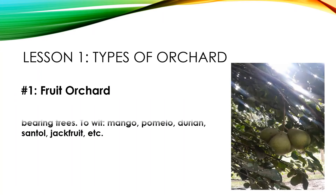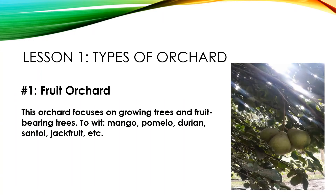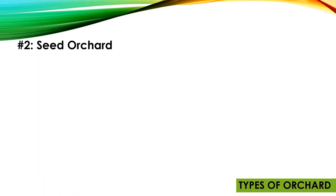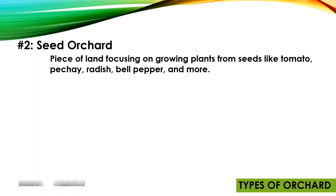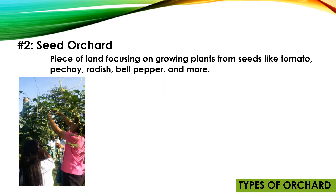Number one: Fruit Orchard. A fruit orchard focuses on growing trees and fruit-bearing trees. For example, mango, pomelo, durian, santol, and jackfruit. Number two: Seed Orchard. A seed orchard is a piece of land focusing on growing plants from seeds, like tomato.